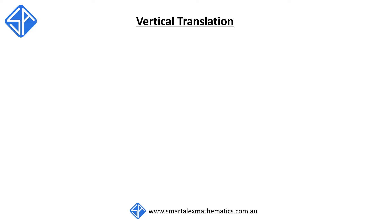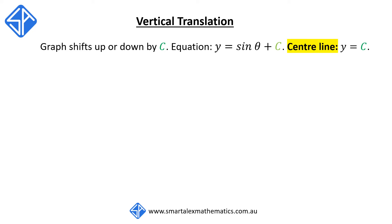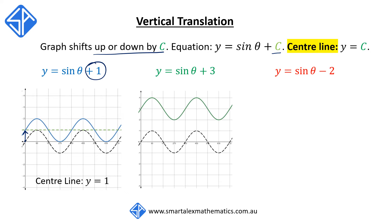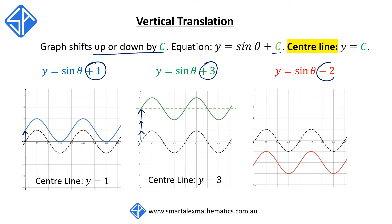The third transformation is vertical translation. The graph shifts up or down by c, and the equation will be of the form y equals sine theta plus c. This value of c gives the new center line. For y equals sine theta plus 1, the graph moves up one unit and the center line is at y equals 1. For y equals sine theta plus 3, the graph moves up three units and the center line becomes y equals 3. For y equals sine theta minus 2, the graph moves down two units and the center line becomes y equals negative 2.